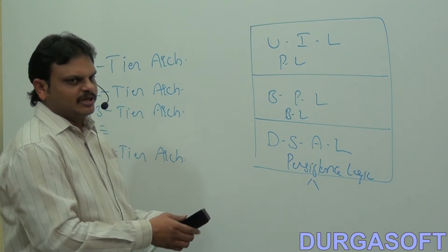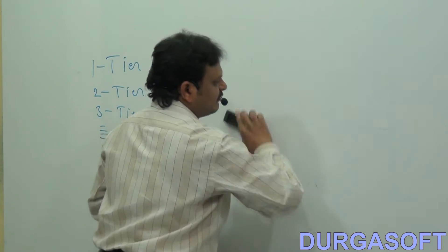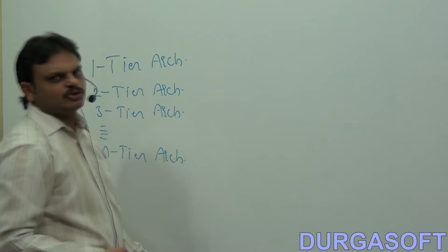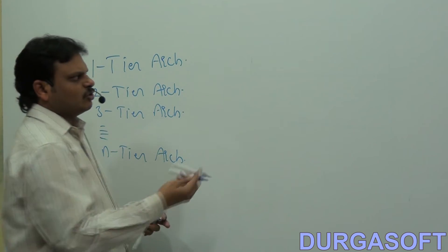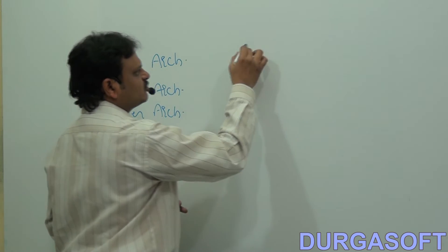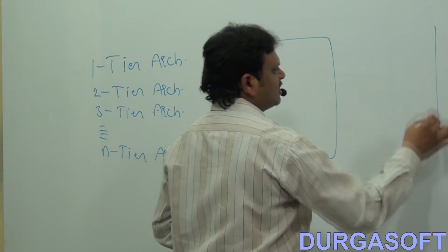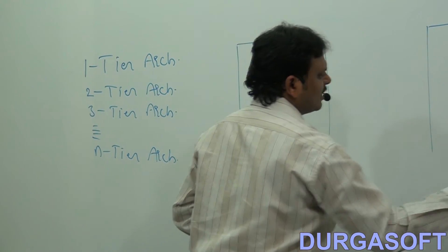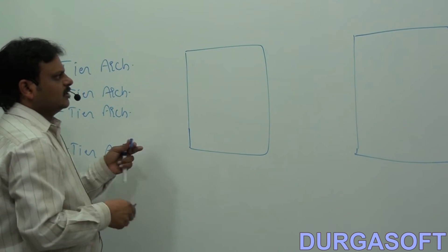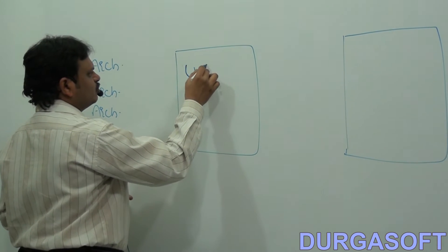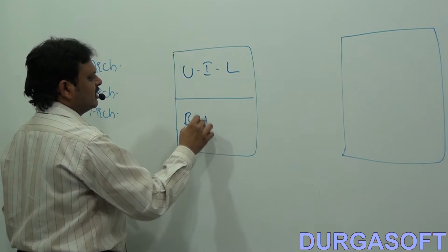If we consider two-tier architecture, inside two-tier architecture we will distribute our application logic over two layers of machines. This is one machine and this is another machine. Over two layers of machines we are able to design this enterprise application. Here we can identify the user interface layer and business processing layer on the first machine.